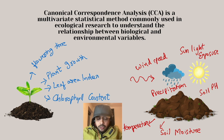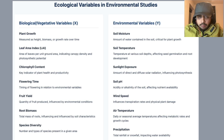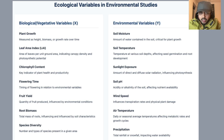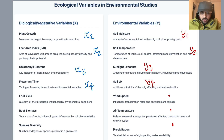To understand Canonical Correspondence Analysis, we group all the biological variables into a vector x — where x1 represents plant growth, x2 represents leaf area index, and so on. Similarly, we group all environmental variables into a vector y — where y1 is soil moisture, y2 is soil temperature, and so on. From these vectors x and y, we will define new variables called canonical variables that help us understand these complex interactions.